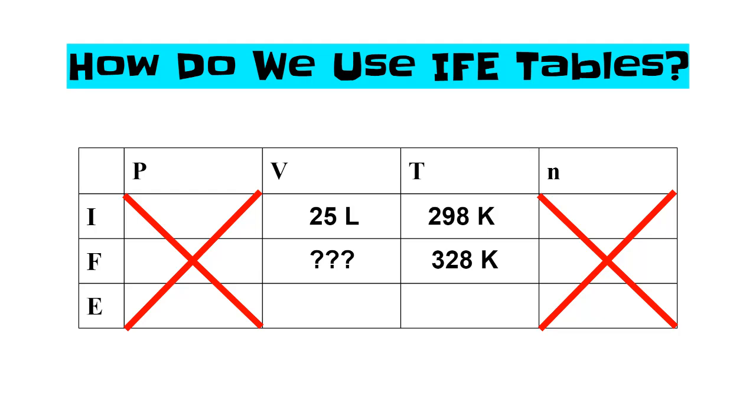Let's fill in the E column now. What is the temperature doing? The temperature from I to F is increasing, so I'm going to draw a little up arrow. According to the relationship between volume and temperature that we just talked about, volume and temperature are directly related. That means when one goes up, the other goes up. So if I increase the temperature, what should the volume do? It should also increase.